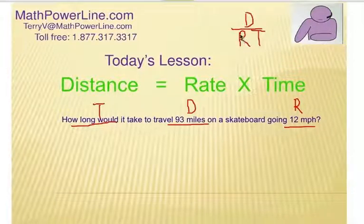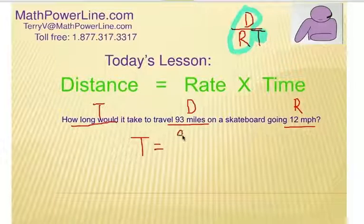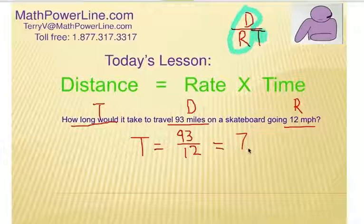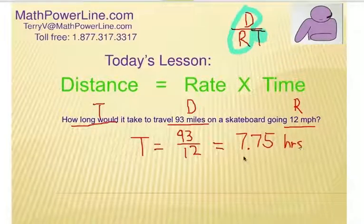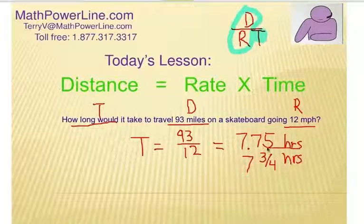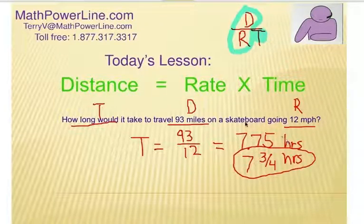Looking at our visual model up here, what is the unknown? That would be time. And what does that leave us with? Distance divided by rate. So time it takes to travel, it would be 93 miles divided by 12 miles per hour. And that would be 7.75. Now, what's my label? It looks like hours. Okay, we can also write it as 7 and 3 fourths hours. All right. So those are three different types of motion problems.